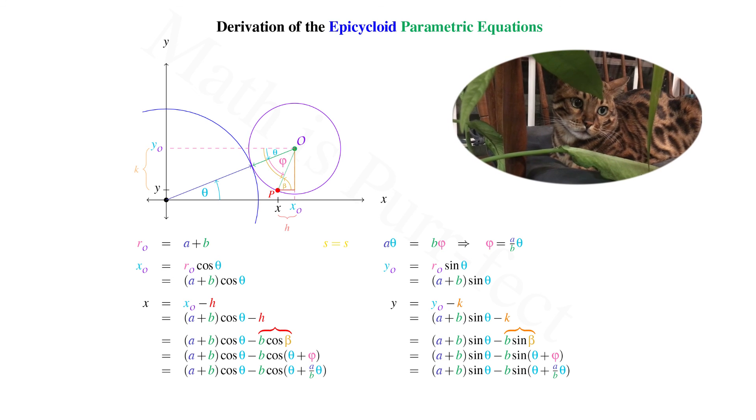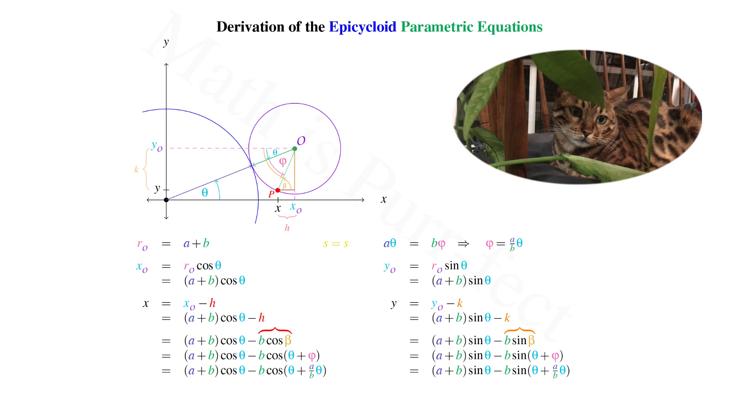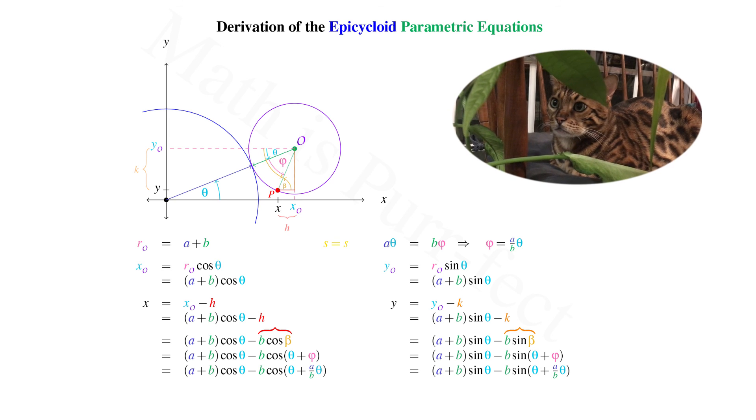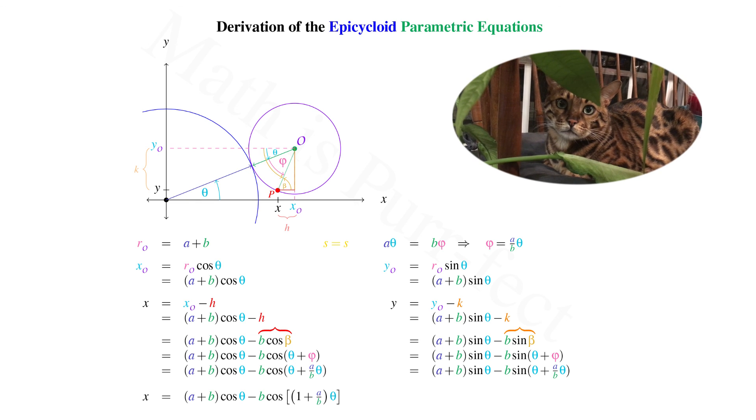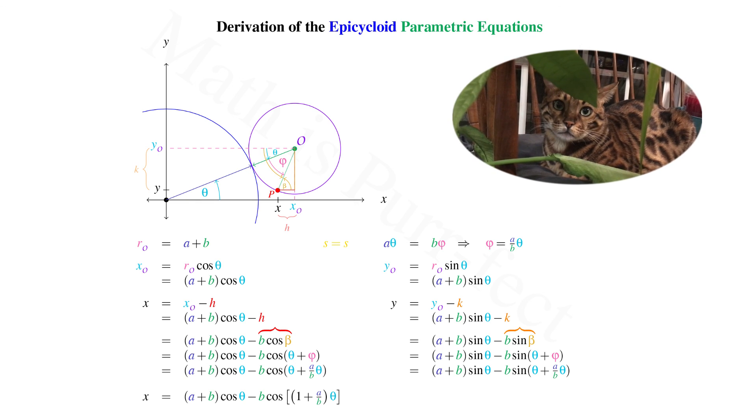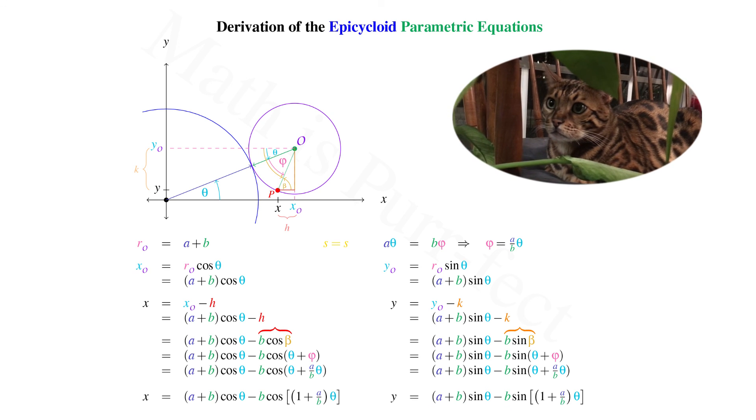So rewriting both of our expressions with this final substitution yields both parametric equations for the epicycloid curve. X equals A plus B times cosine of theta, minus B times cosine of the quantity, 1 plus A over B times theta.